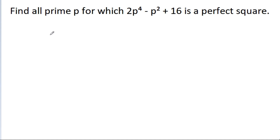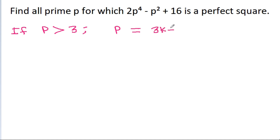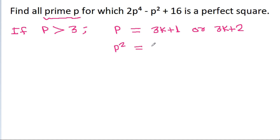So if we take p not equal to 3, then p can be equal to 3k-1 or 3k+1. p cannot be equal to 3k because p is prime, so p squared will be of the form (3k-1)² or (3k+1)².